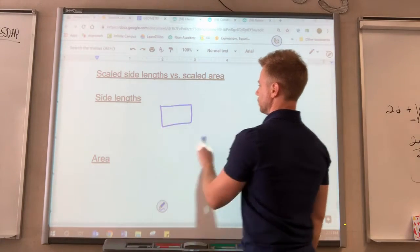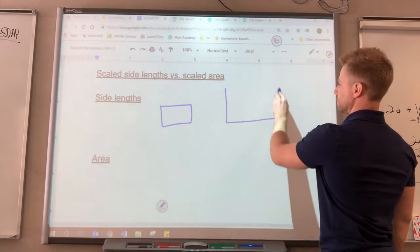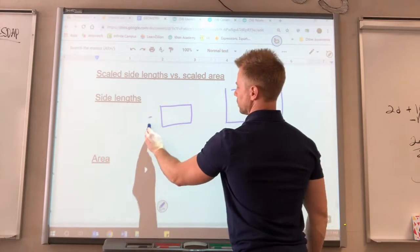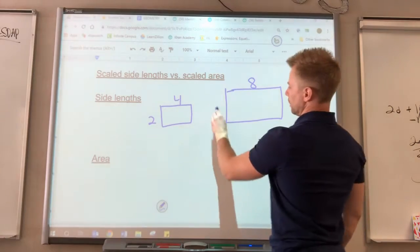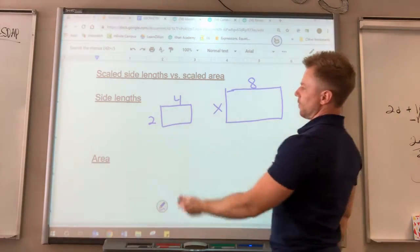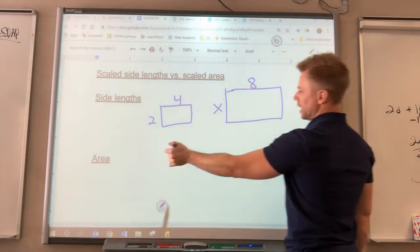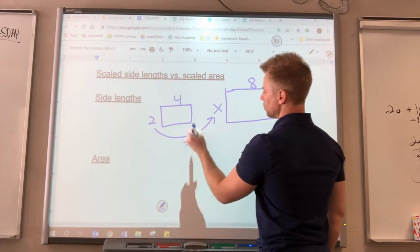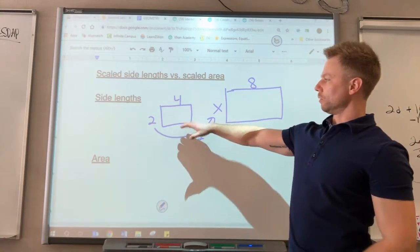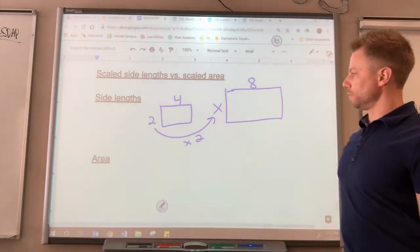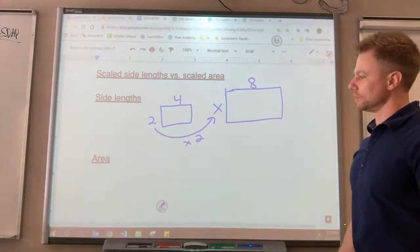So if we have two rectangles, say this is 2 and 4 and 8, and this is x, then we can see 4 times 2 is 8, so then we must also take 2 times 2 to get that side length of 4. What we're doing when we're finding side lengths is we're just multiplying by 2 once to get that missing side length.